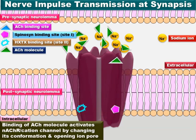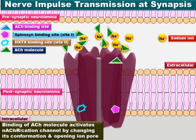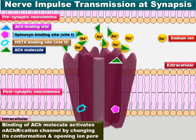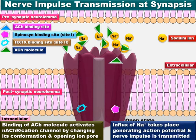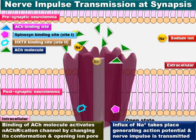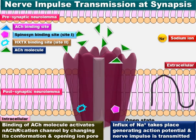As a result, the cation channel is activated, and due to the change in conformation of the channel, the ion pore opens and sodium ion influx takes place — that is, from the synaptic space into the cytosol. As a result, the postsynaptic membrane depolarizes and an action potential is generated, resulting in nerve impulse transmission across the synapse into the postsynaptic membrane.